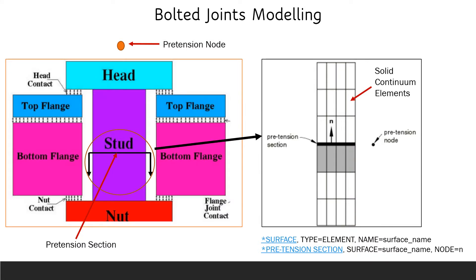In this slide we are going to discuss about how we can create a pretension section. Before that, we will consider the assembly condition and mainly focus on what contact distributions can happen. If you see the head and the top flange, there will be contact between these two; then top flange to bottom flange is another contact; and from bottom flange to nut there will be a third contact.